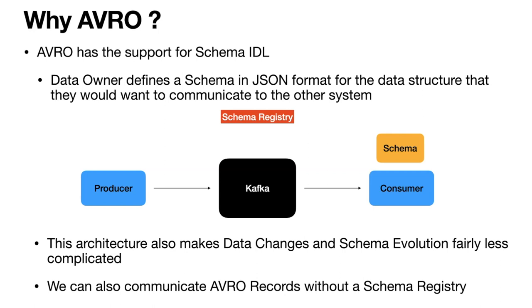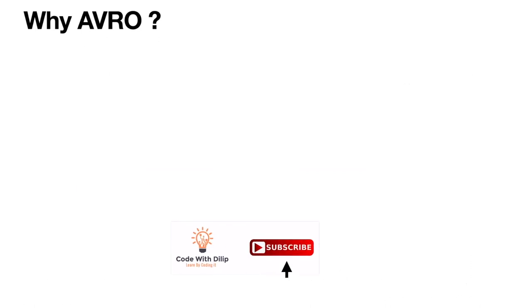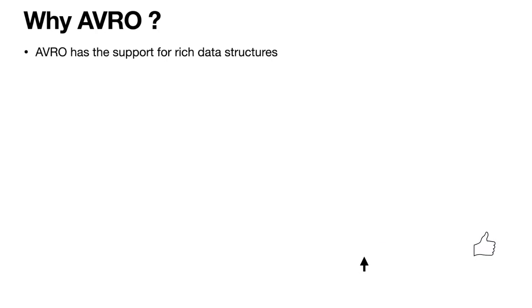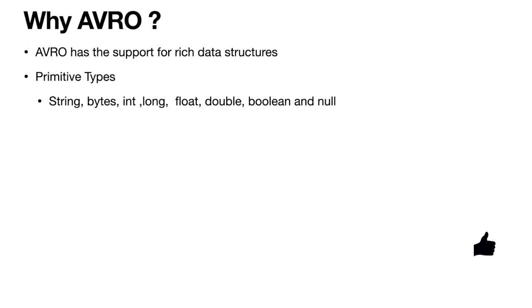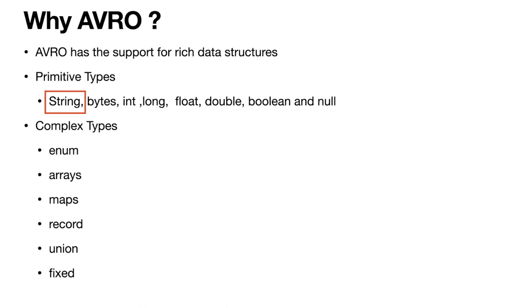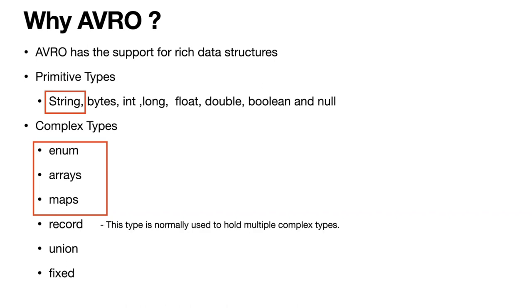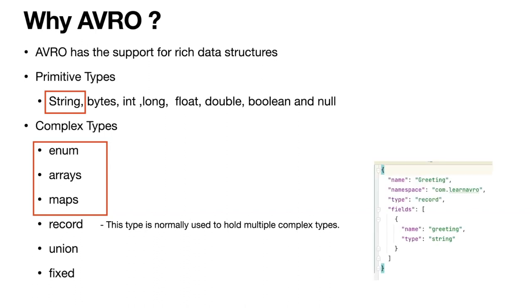Another important reason why Avro is very popular is its support for rich data structures. It has support for all possible primitive types available in software. One thing to note is that string is considered a primitive in Avro. The supported complex types include enum, arrays, maps, and record. The first three are pretty much standard. The fourth one, record, is a special type in Avro normally used to hold or represent multiple complex types.